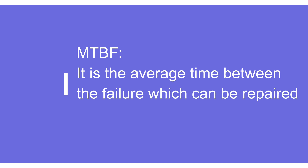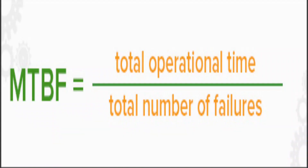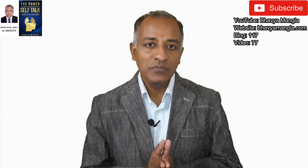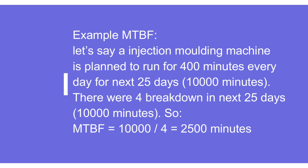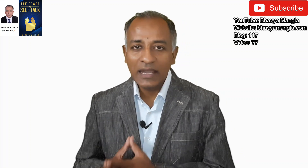Now let's take an example of MTBF — mean time between failure. By definition, MTBF is the average time between failures that can be repaired. The formula is: total lifespan across different equipment divided by the number of failures. For example, an injection molding machine should run 400 minutes per day over 25 days in a month — that's 10,000 minutes total. If there were four breakdowns in that month, MTBF = 10,000 ÷ 4 = 2,500 minutes.